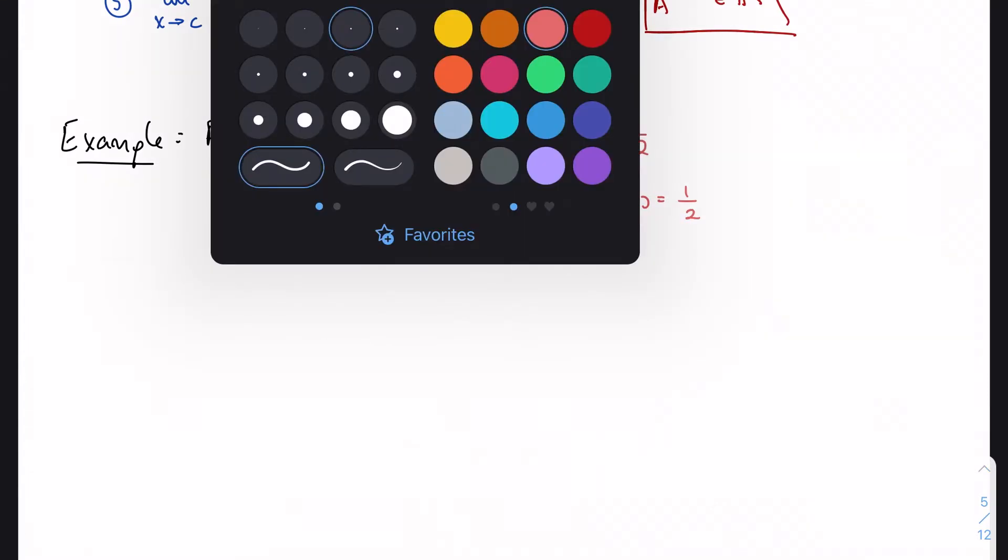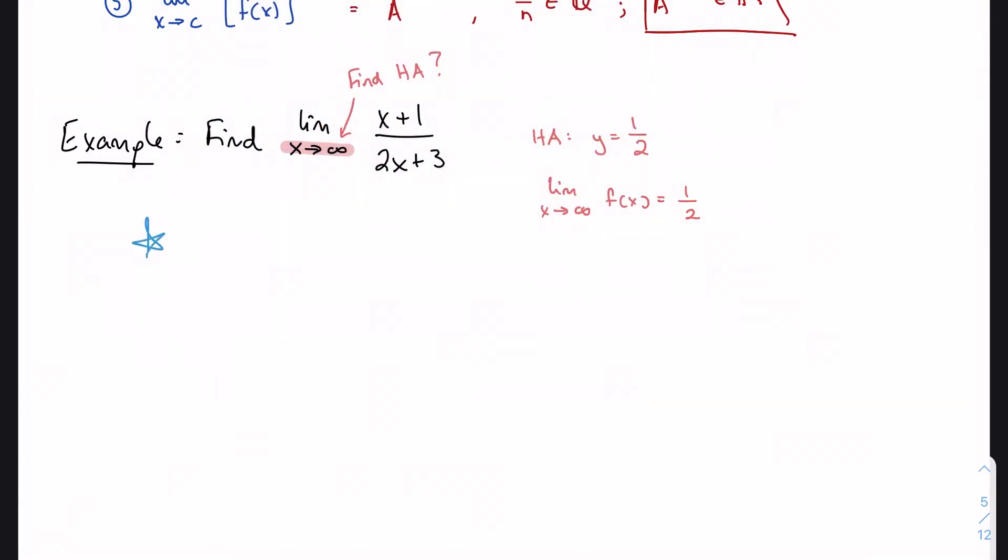The big tip here, the big key: when we get either an infinity over infinity, or a zero over zero form, and I believe I've mentioned this before, it's usually a clue that we want to simplify something further.